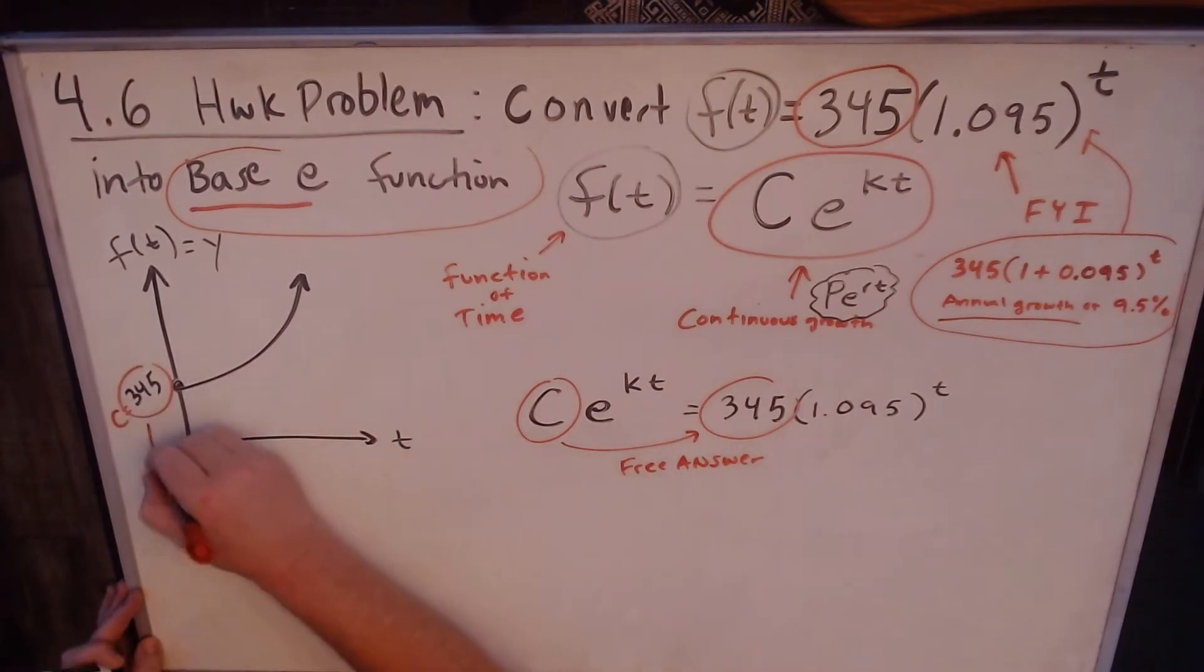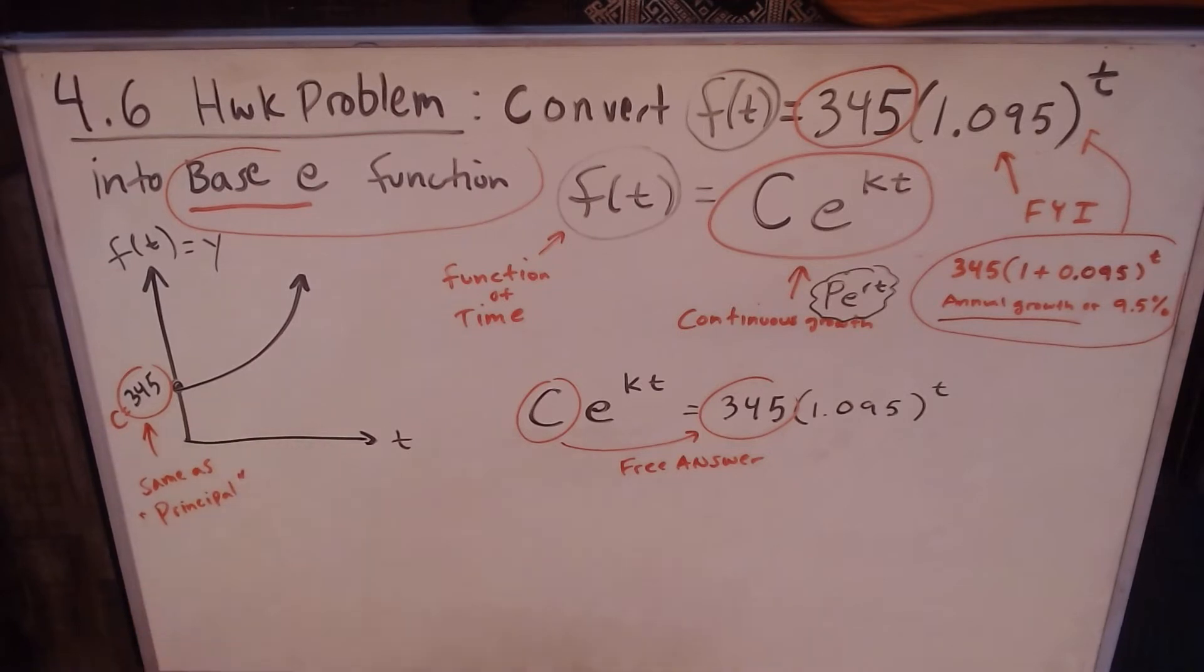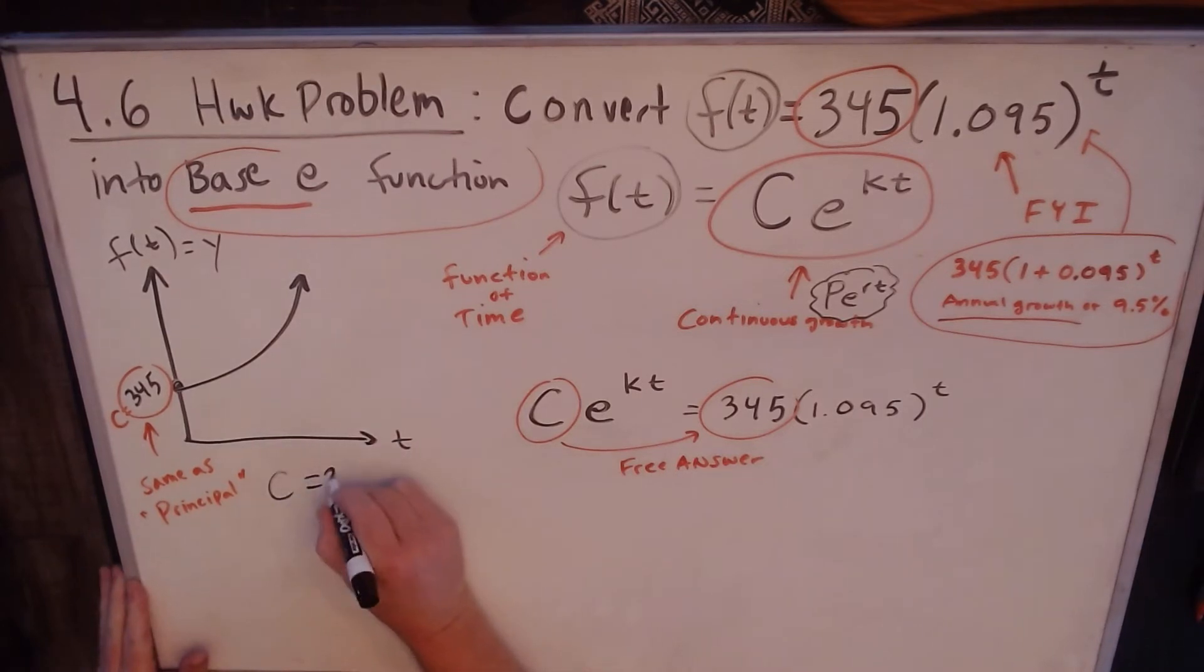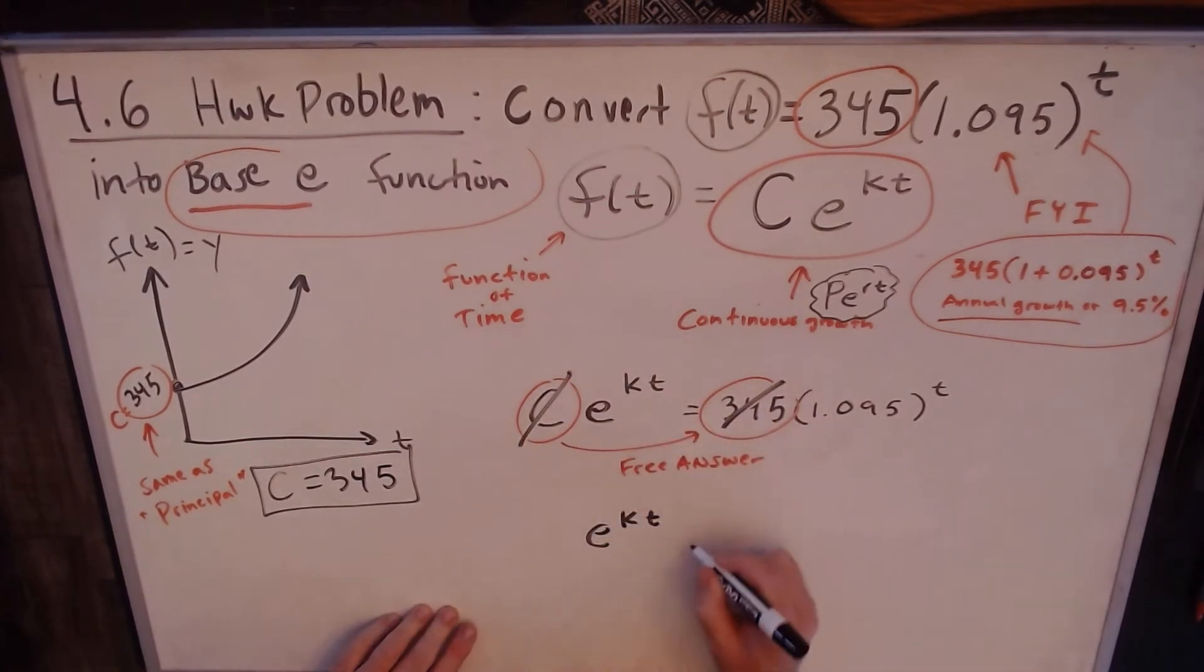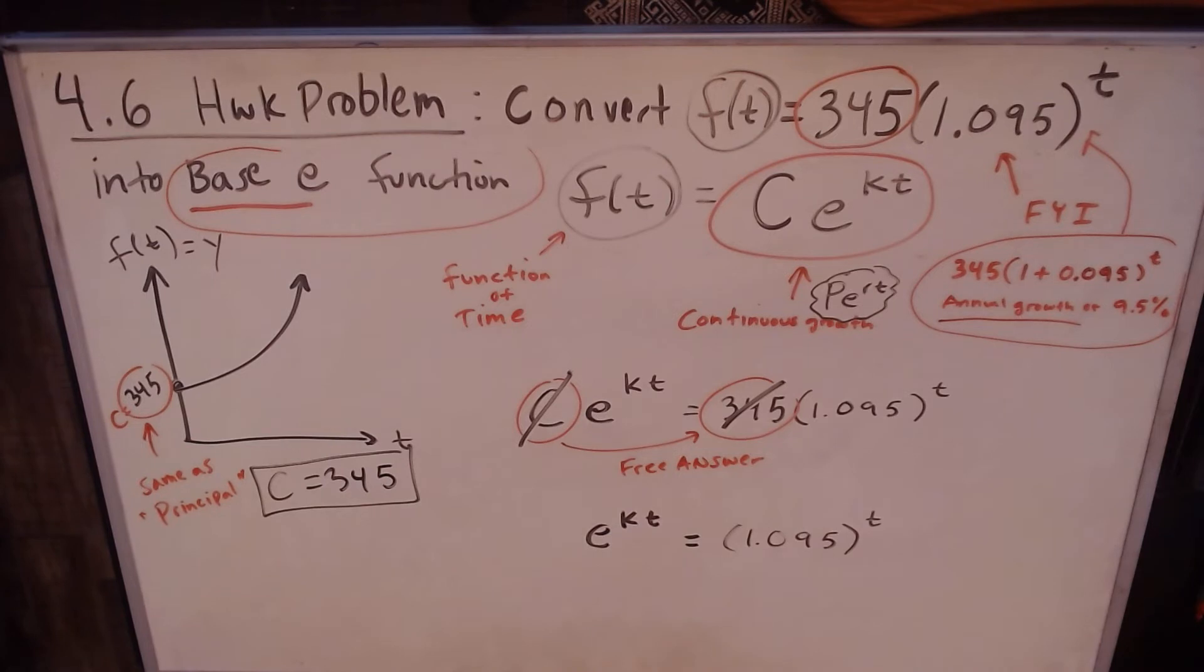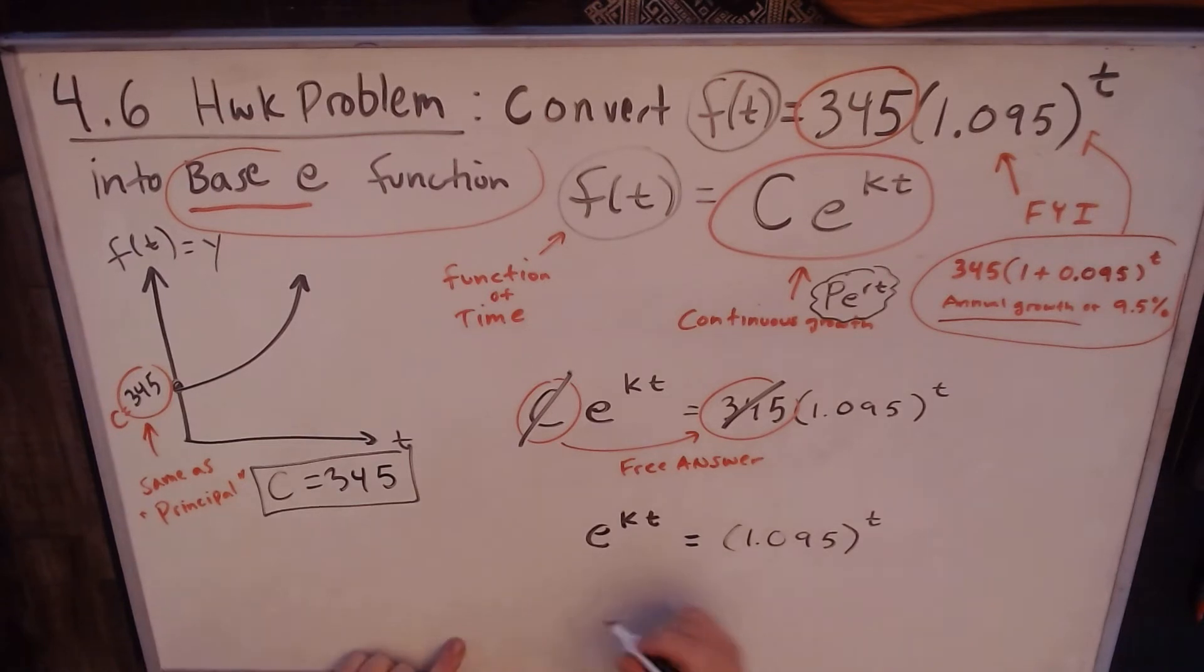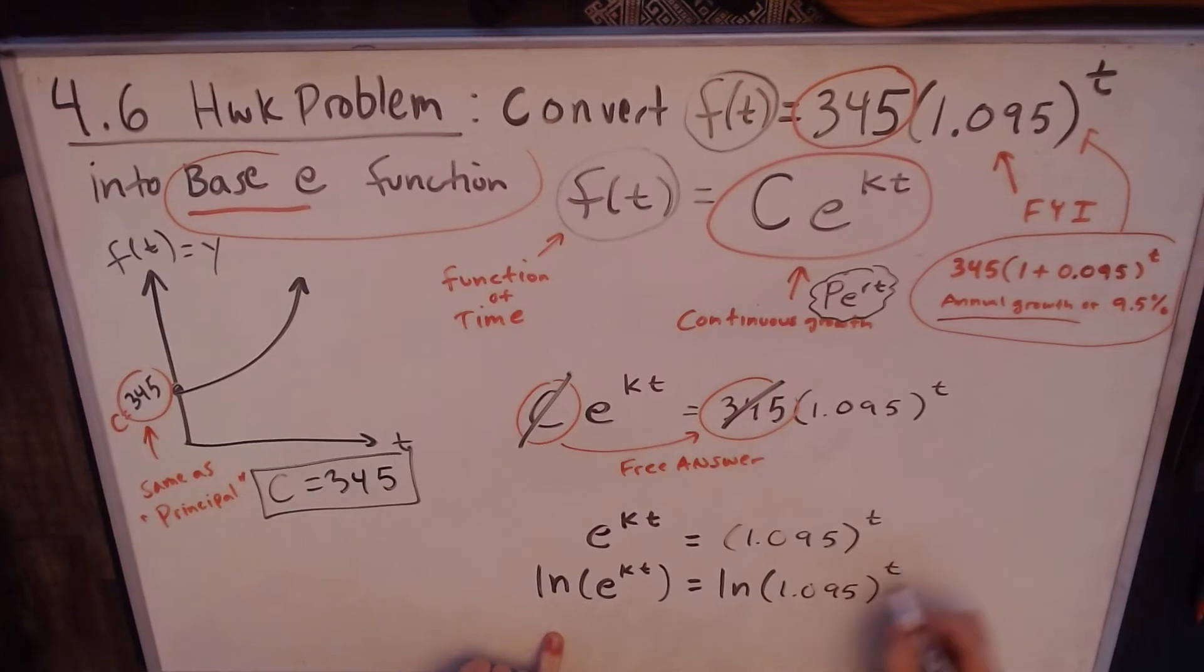So you're going to set these equal to each other. You can just ignore the f(t) notation because if this f(t) is equal to this exponential and this f(t) is equal to this exponential, by substitution we can set them equal to each other. You get one of the answers for free, that's the c value. That's a free answer. C is the same as p, it's the same as principle. So we don't need that anymore.